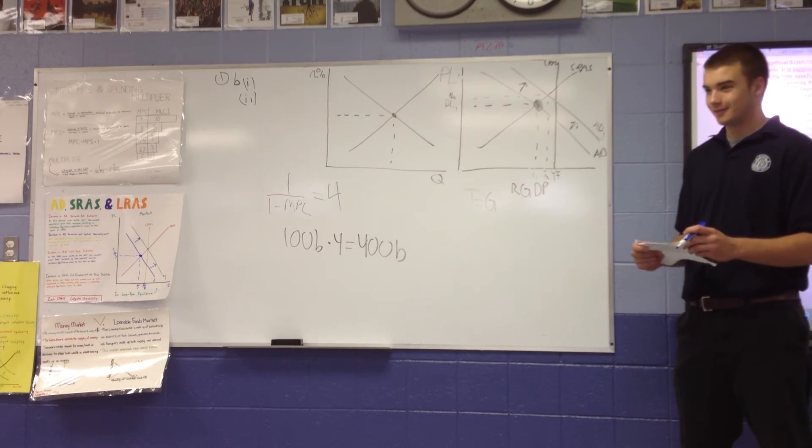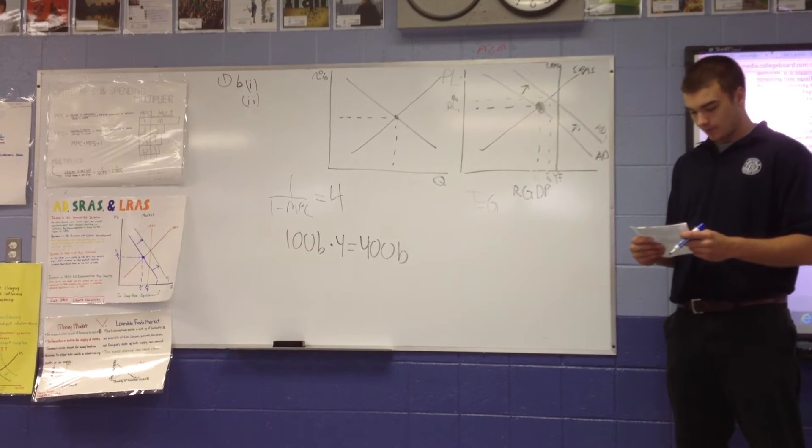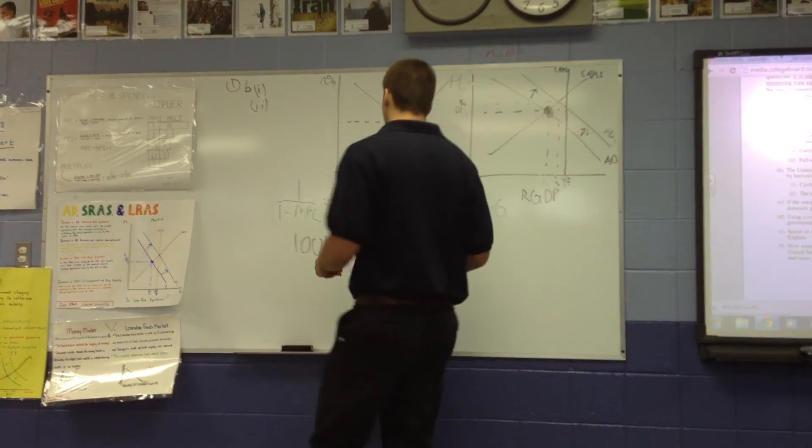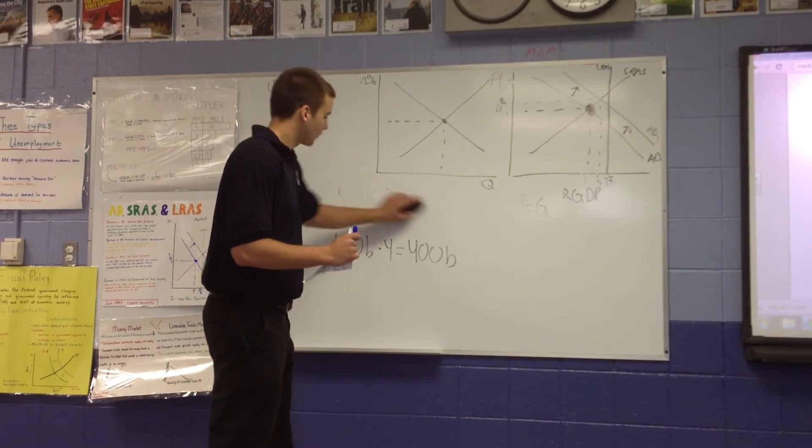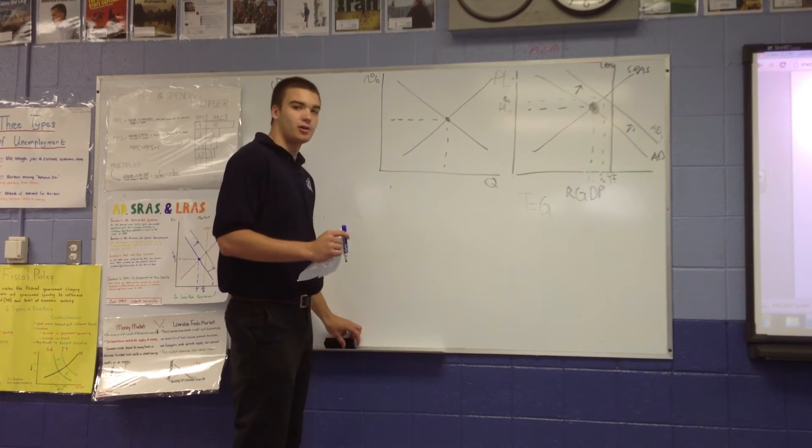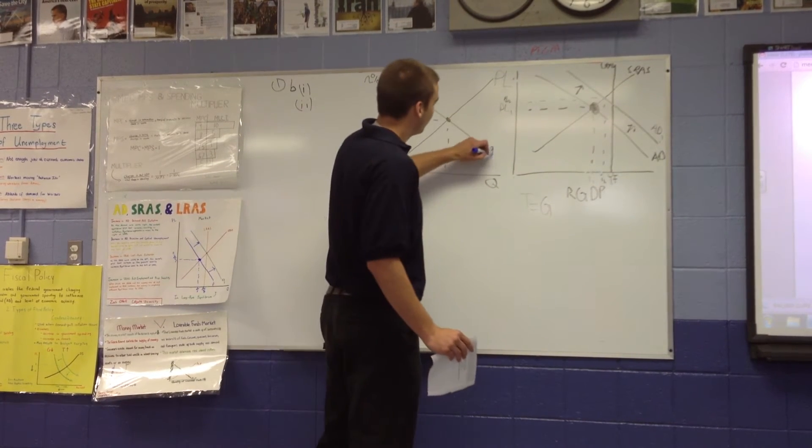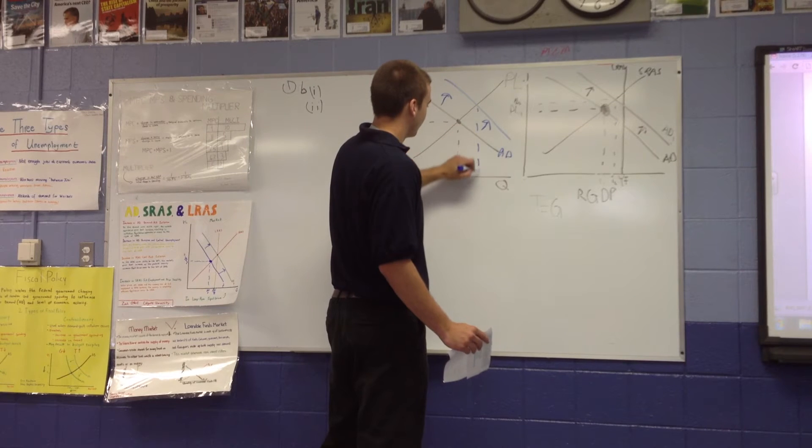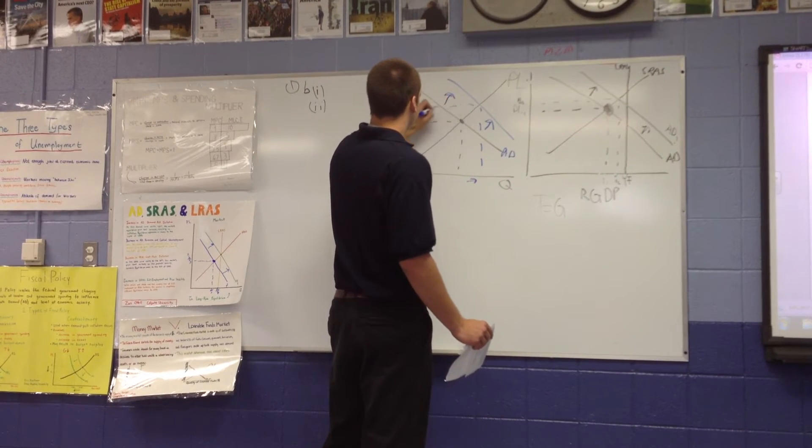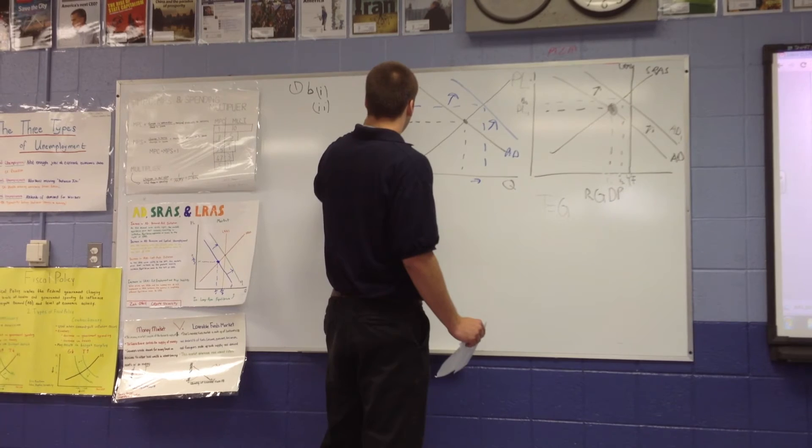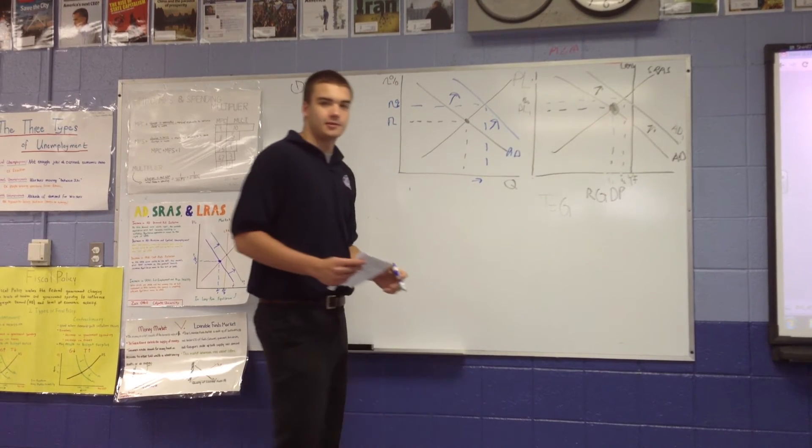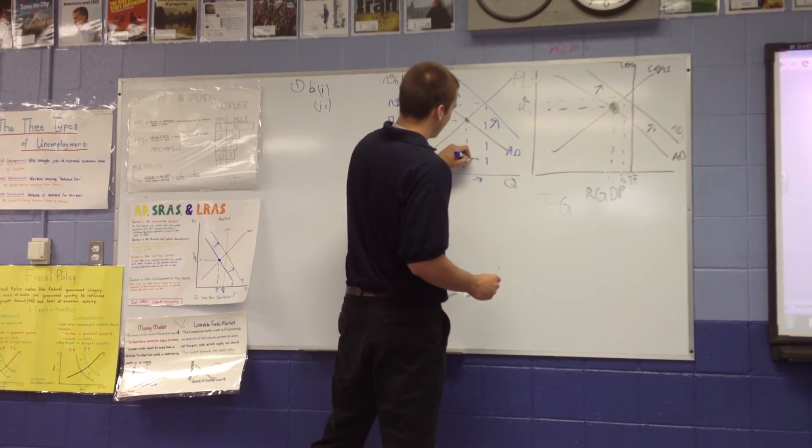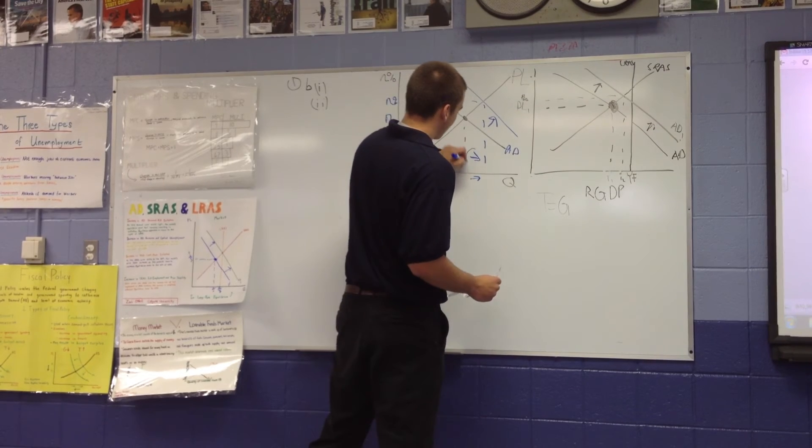Part D. Use a correctly labeled graph of the loanable funds market to show the effect of the $100 billion increase in government spending on the real interest rate. So, since the government borrowed, it would increase the demand of the loanable funds market. So, it would increase the quantity and the price level. What is the price level of loanable funds called? It's the interest rate, the cost of borrowing money. Could you draw that arrow showing that there's higher interest rates? Circle that so we can see that there's going to be higher real interest rates.